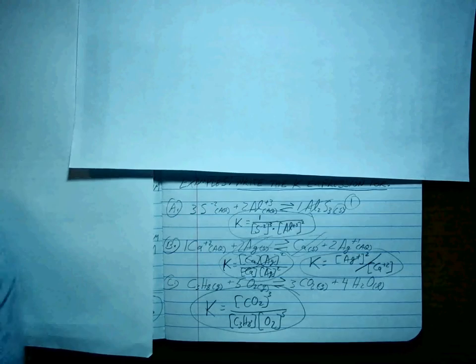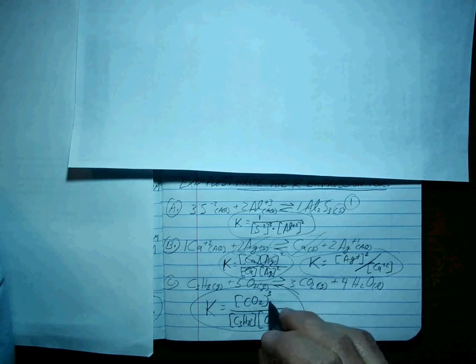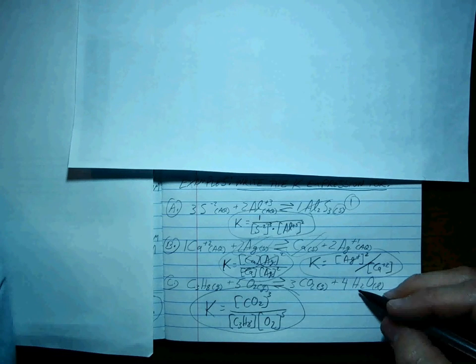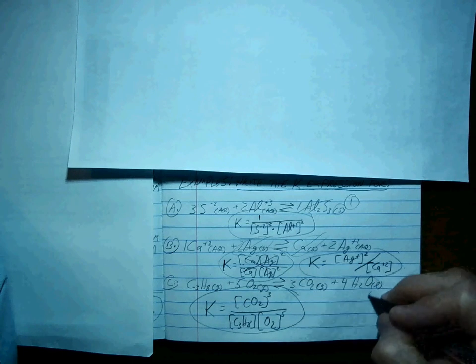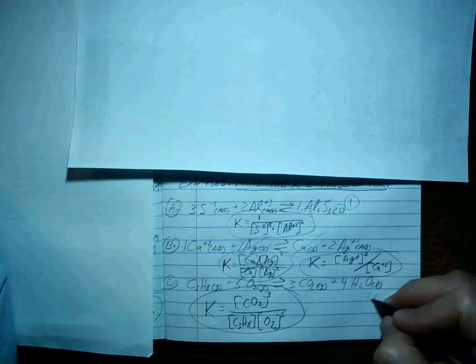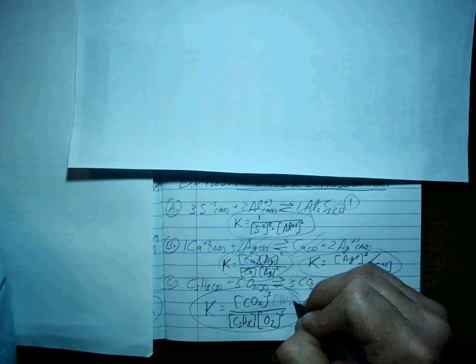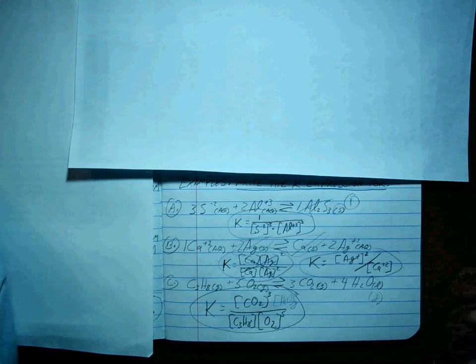If it's in the liquid form, you can't change the concentration, and it's not part of K. But if we increase the temperature within this reaction high enough so the H2O turned into a gas, then the H2O gas would be included to the 4th power. Because it's the gaseous state. Got it?